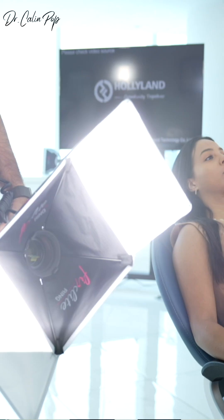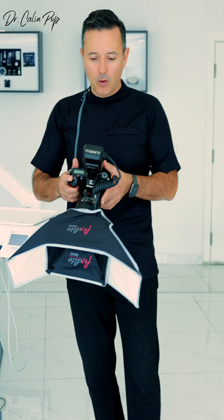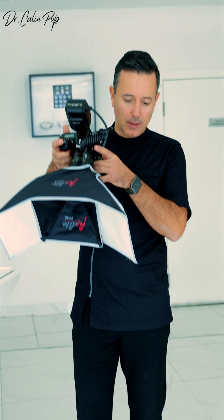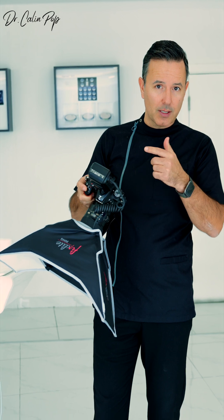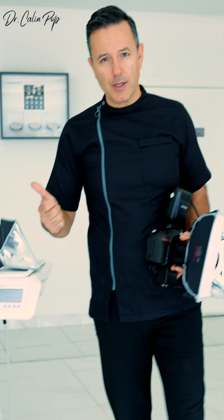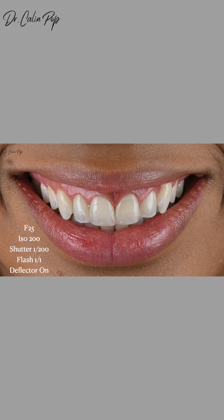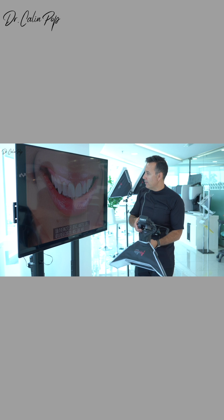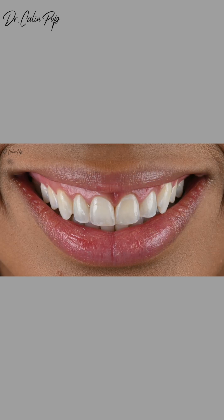If I want the light positioned more towards the center of the tooth, I simply change the distance — I move a bit farther away, and of course I have to adjust the exposure. You can see the settings: F25, ISO 200, shutter speed 1/200. This gives a very nice distribution of light on the line angles.